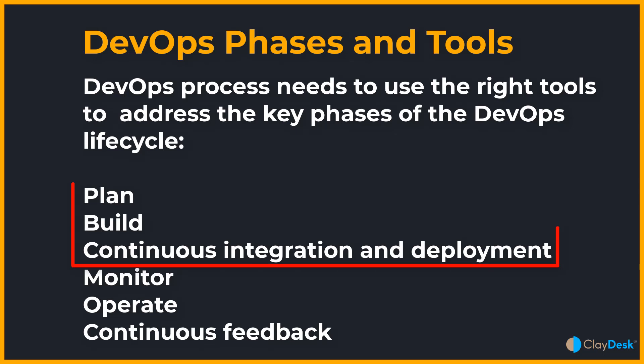So let's start with the first phase: Plan. Then next is Build. Third is Continuous Integration and Deployment. Then we have Monitor, Operate, and Continuous Feedback. I'm going to be talking about the first three, and then Syed is going to be talking about the last three. So let's talk about the first phase — Plan.